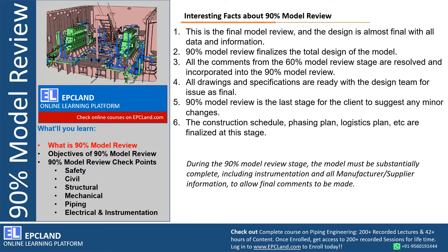Now let us talk about 90% model review — what it is and a few interesting facts related to it. First of all, this is the final model review. We talked about 30% and 60%; this is the final model review. We are at the 90% design stage, meaning the design is almost final. The design contractor is claiming that the design is almost final with all the data and information. We are saying 90% model review is the total design of the model — anything which was planned as a design phase has to be complete.